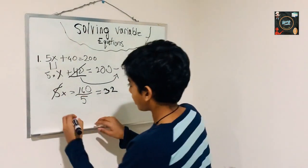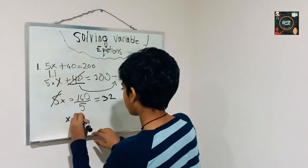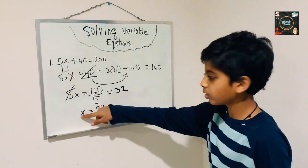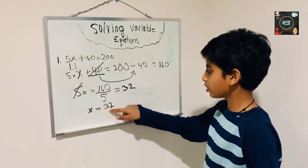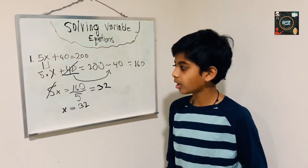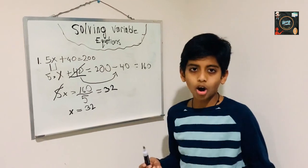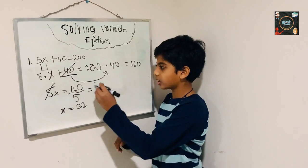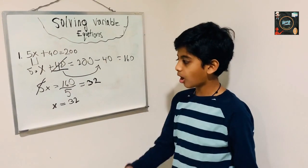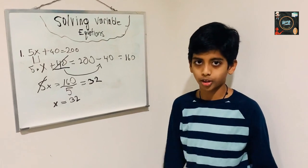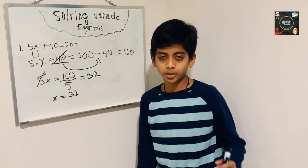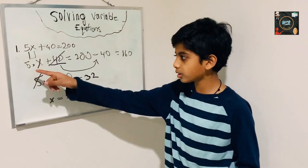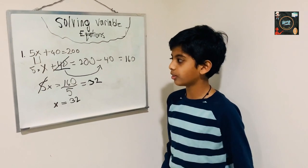So now we got x equals to 32. Whenever you're doing these types of problems, always remember: when we switch numbers to the opposite side, just change the numbers — don't switch the variables, because it's going to be really complex. Always switch the numbers instead of the variables.